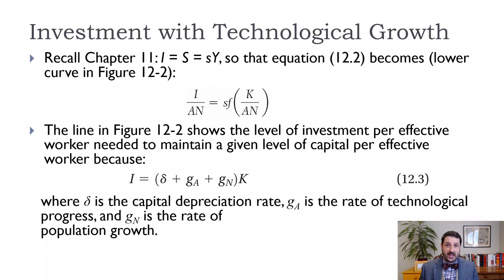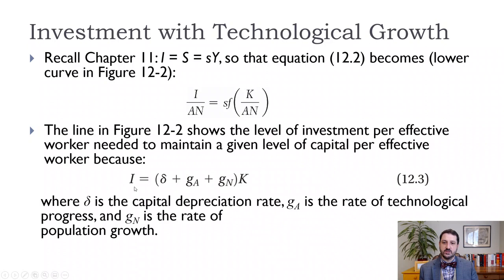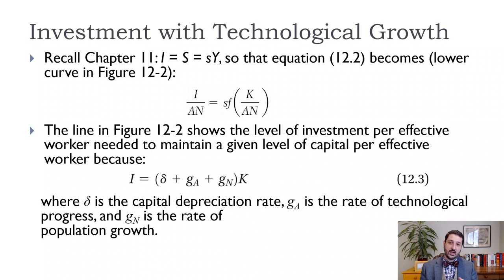Because we need to grow the technology variable A, we can also grow the labor variable N in the same kind of way. This gives us a little more realism because the labor force is growing in a country like the United States — and of course, if it was shrinking, we could put a negative number in there. In order to maintain our level of capital per effective worker, investment needs to equal depreciation delta, plus the growth rate in technology G_A, plus the growth rate in the population or labor force G_N, all times k. Before, we just had it equal to delta·k, because that was the only thing reducing capital. But now what's reducing capital per effective worker is not only depreciation delta, but also the growth rate in technology and the growth rate in the labor force. We have to account for all three when thinking about our steady state.